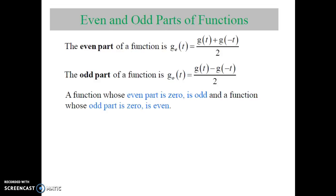Now, the even and odd parts of a function. The even part of a function can be written as g_e of t, which is equal to g of t plus g of minus t, upon 2. You can easily separate the even part and odd part from a signal. The odd part can be expressed as g_o of t, equal to g of t minus g of minus t, upon 2. A function whose even part is zero is odd, and a function whose odd part is zero is called an even function.